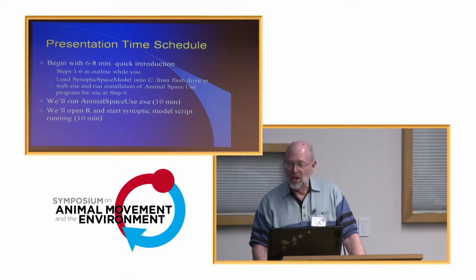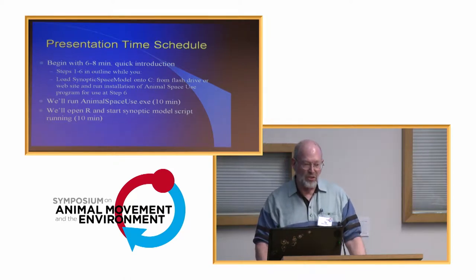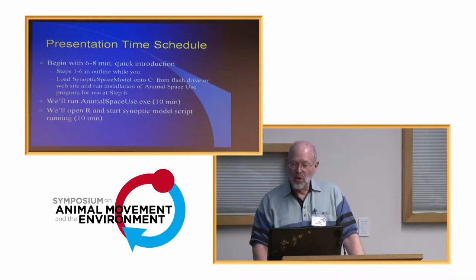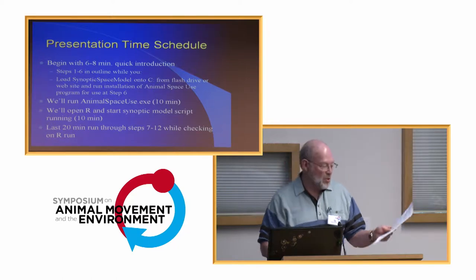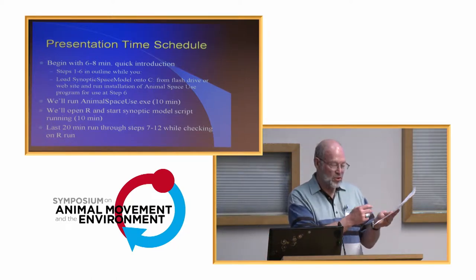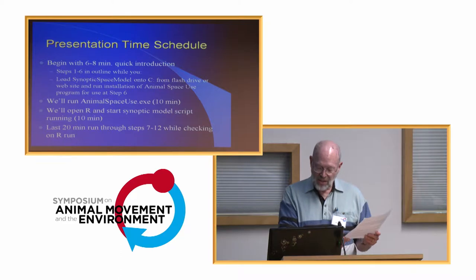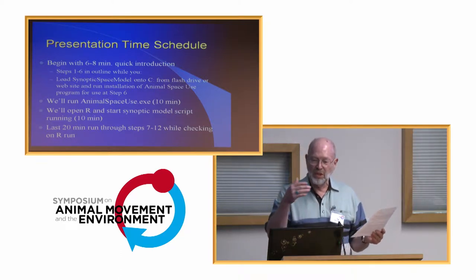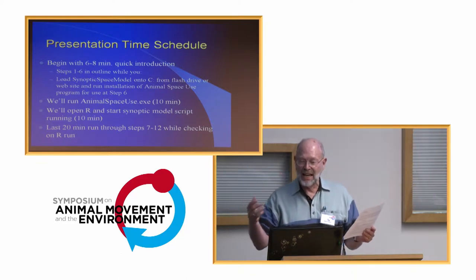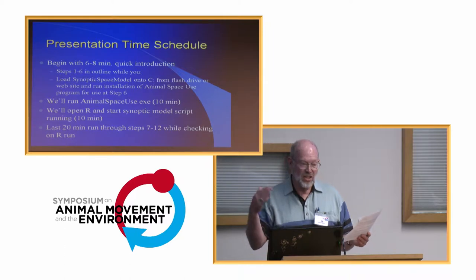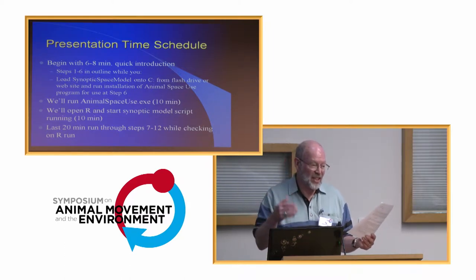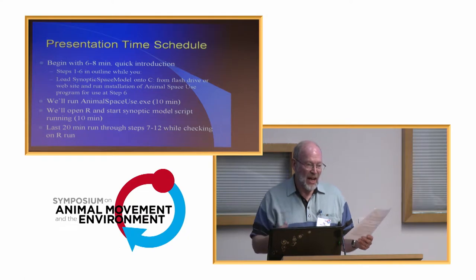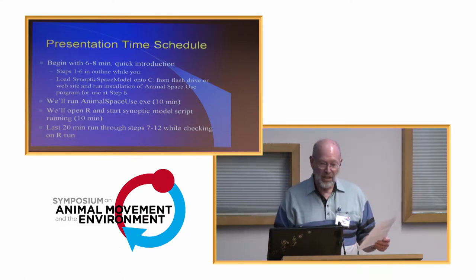Then we'll open R and start the synoptic model using a script that's on that jump drive or available at the website. That'll start running — about 10 minutes to get going. For the last 20 minutes, we'll run through the remaining steps seven through twelve on the handout and jump back and forth looking at how the R program is doing. It's an interpreted language so it doesn't run as fast as compiled languages.